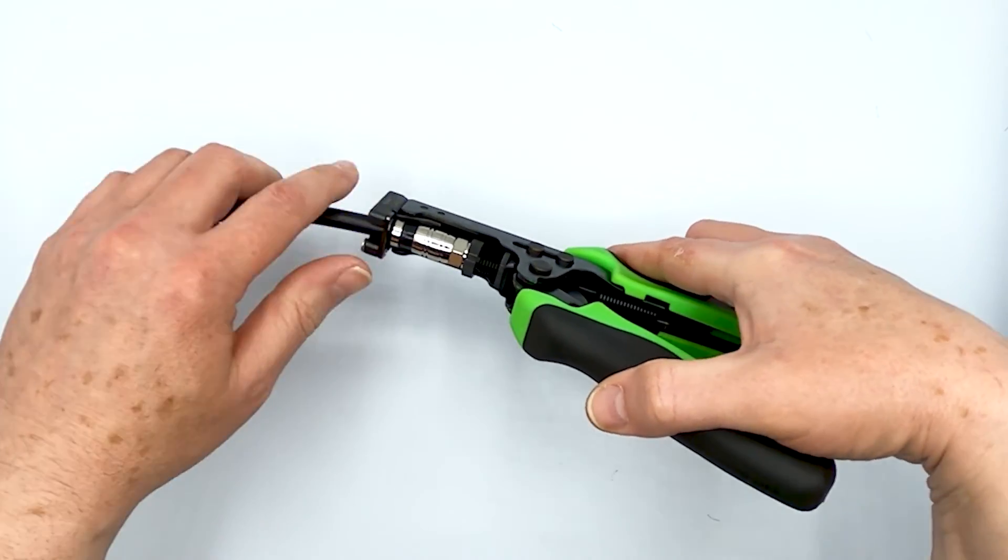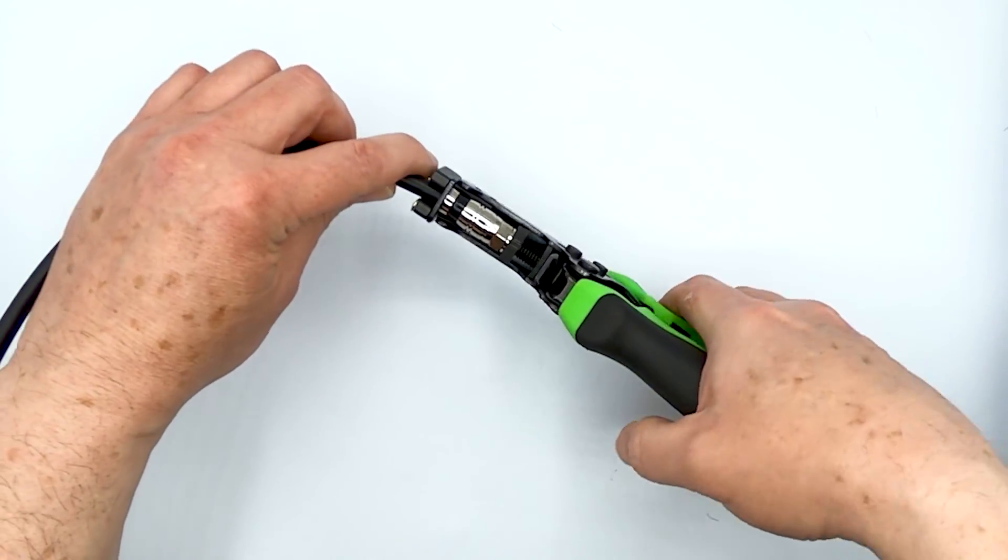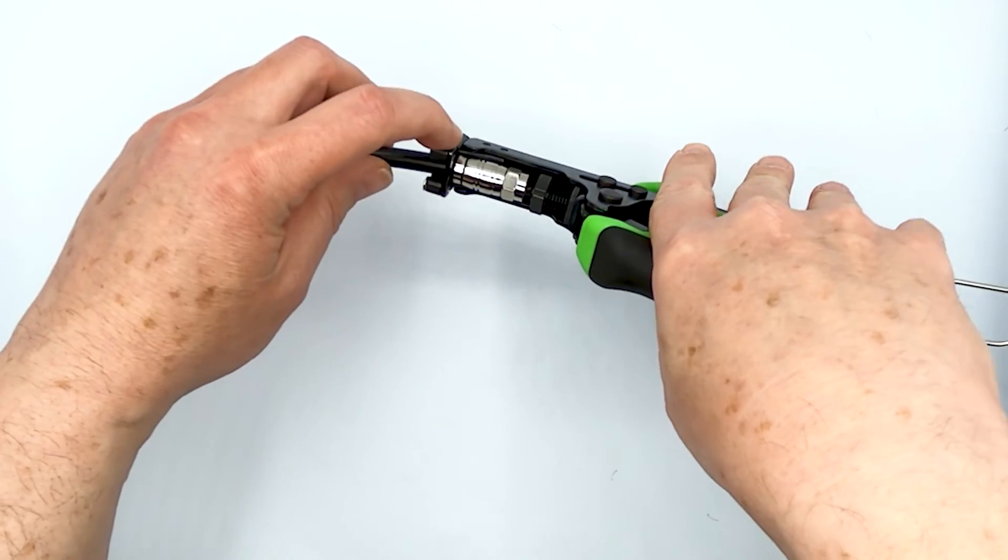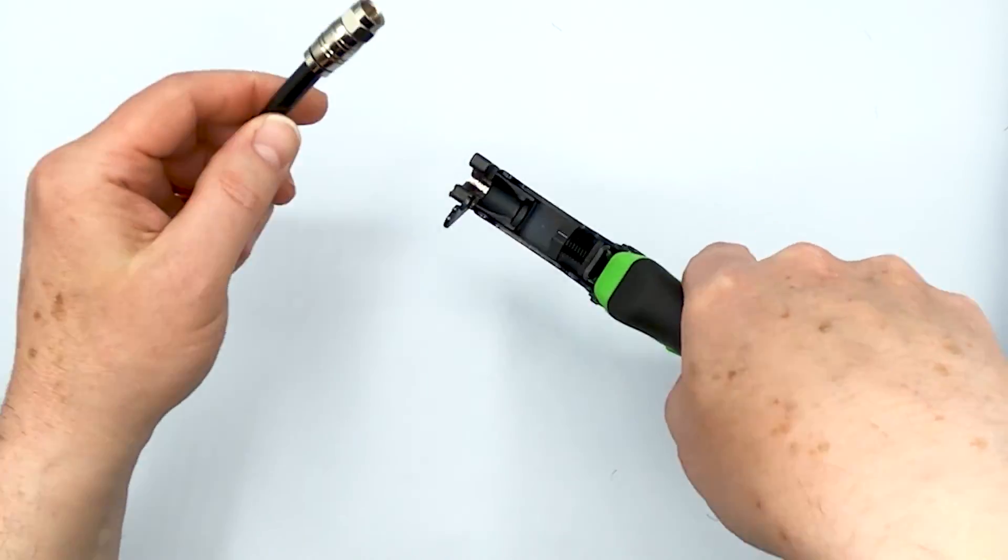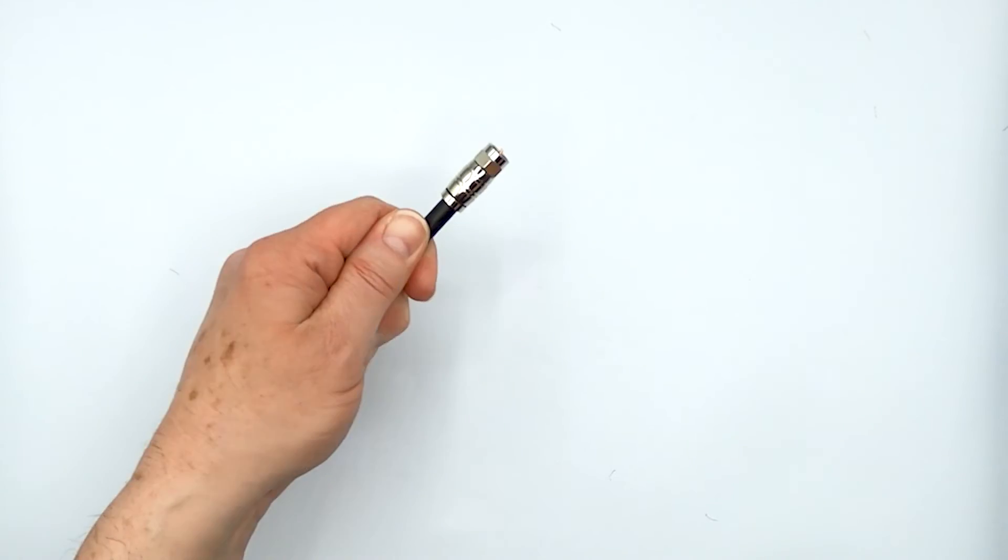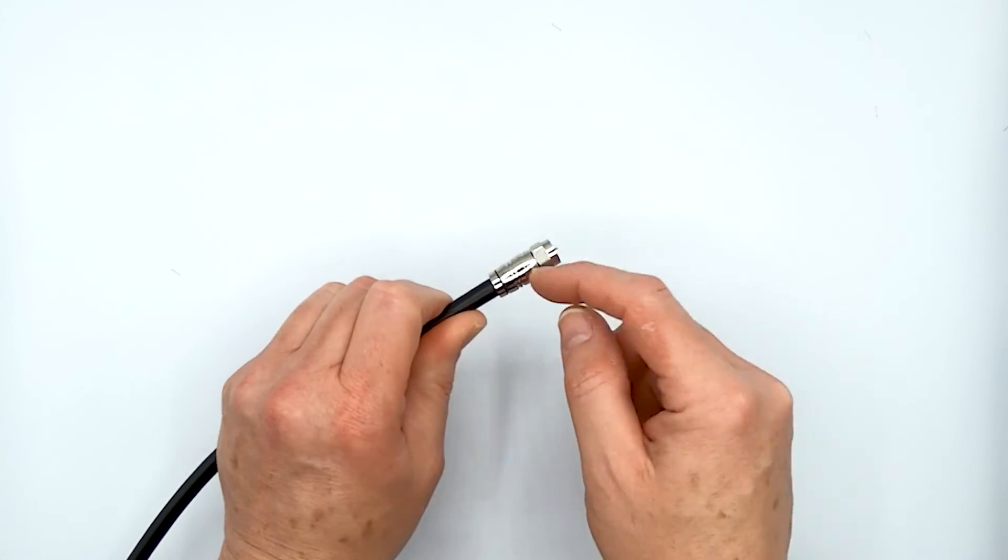Remember, close that gate. And then simply compress. That's it. Open up the gate. Take it out. And there you go. You have a fully compressed F connector all the way around.